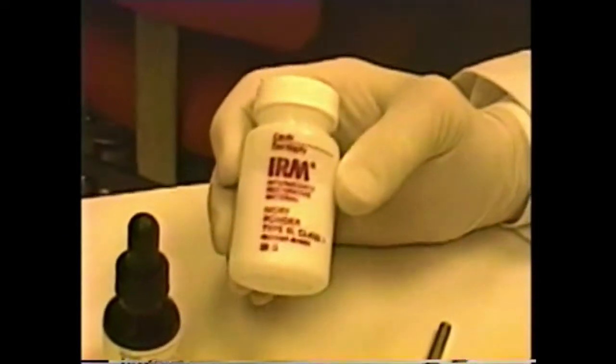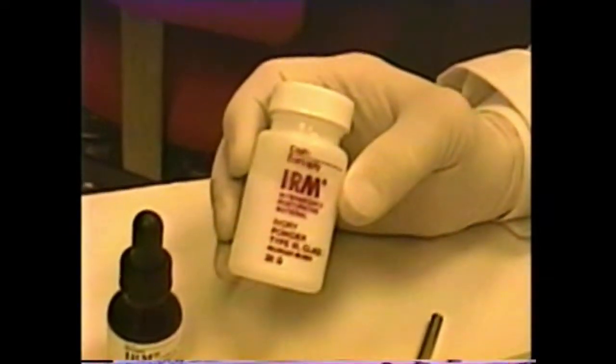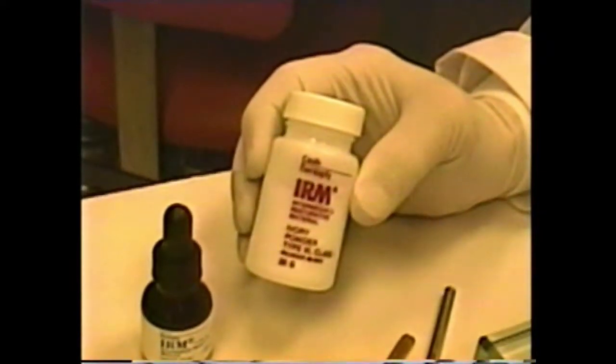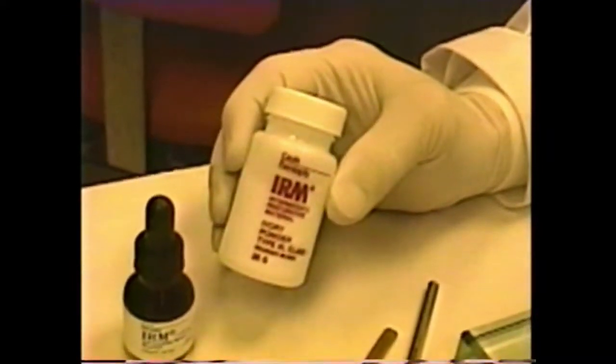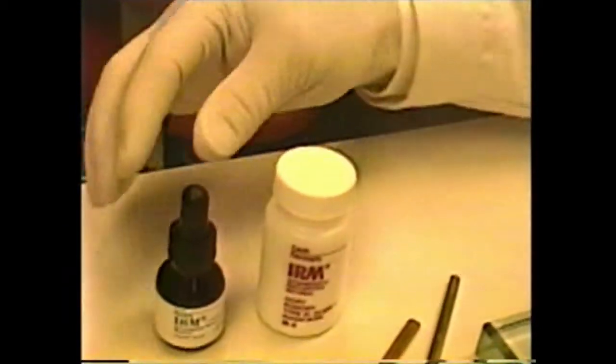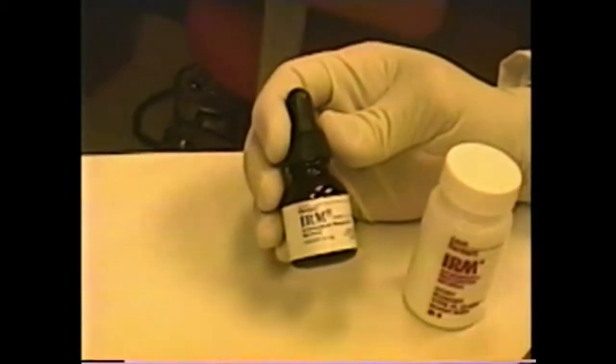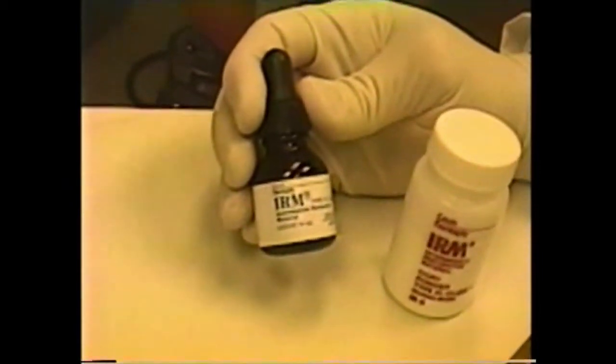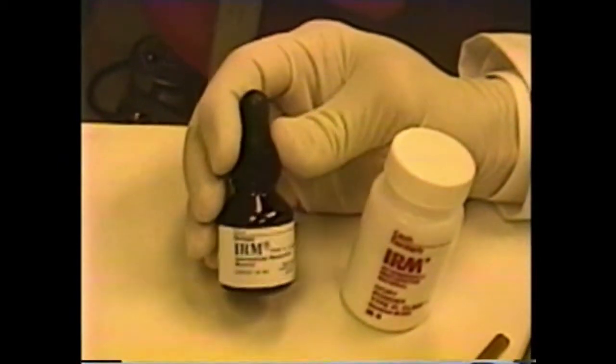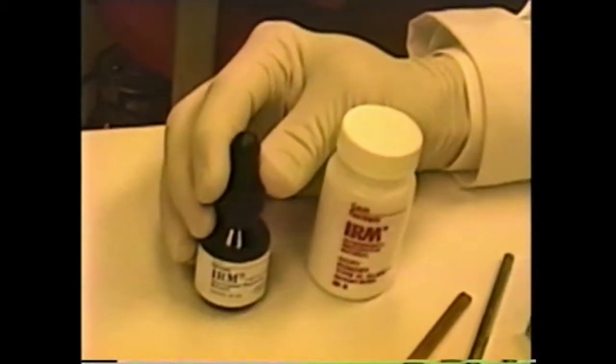By way of review, the powder is principally zinc oxide and does have some polymethomethacrylate spheres as well as a strengthening agent. The liquid is essentially eugenol, or some folks say oil of cloves or eucalyptus oil, and you'll notice the characteristic smell once you dispense the liquid.